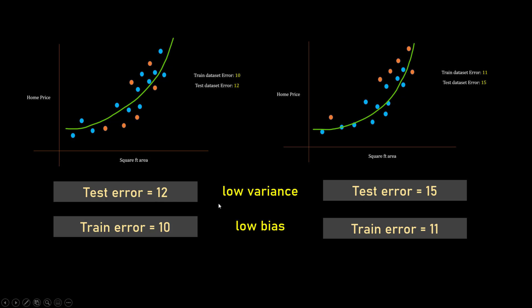Because your test error doesn't vary too much based on what training samples you have selected, and also your train error in general is low, that's why it's called low bias.